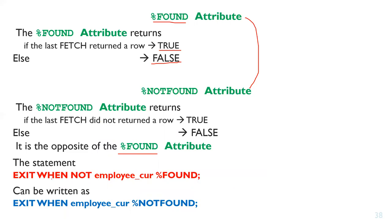The loop exit condition can be written as: EXIT WHEN employee_cursor%FOUND, or equivalently EXIT WHEN employee_cursor%NOTFOUND. The difference is that %FOUND and %NOTFOUND are logical inverses — %FOUND returns true when a row is found, while %NOTFOUND returns true when no row is found.